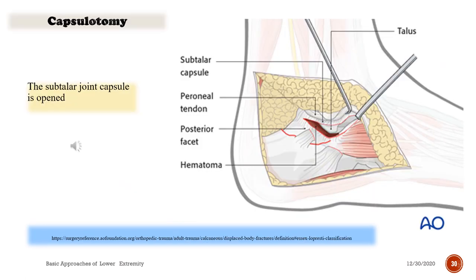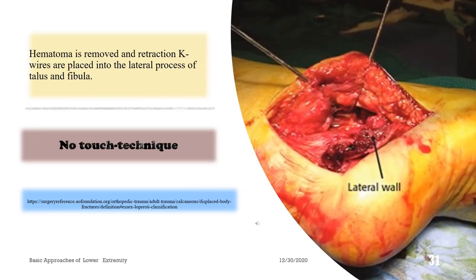Capsulotomy: the subtalar joint capsule is opened in a C-figure using a no-touch technique. Hematoma is removed and retraction K-wires are placed into the lateral process of the talus and fibula.